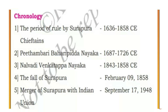Next, chronology of Surapura chieftains. The period of rule by Surapura chieftains is 1636 to 1858 CE. Second, Pithambari Baharipidda Nayaka: 1687 to 1726 CE. Third, Nalavadi Venkatappa Nayaka: 1843 to 1858 CE. Fourth, the fall of Surapura: February 9, 1858. Fifth, merger of Surapura with the Indian Union: September 17, 1948.